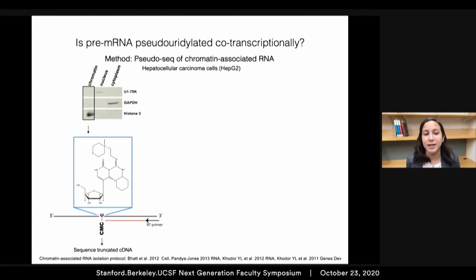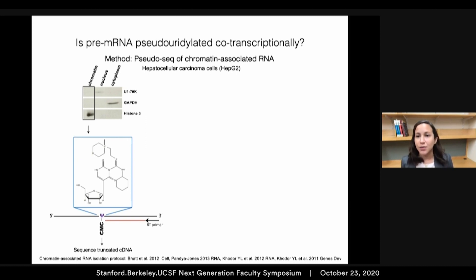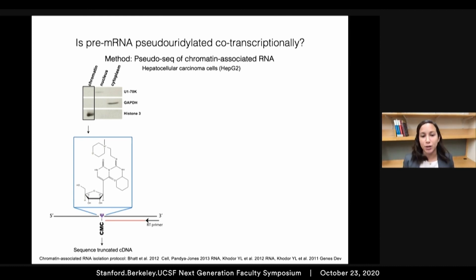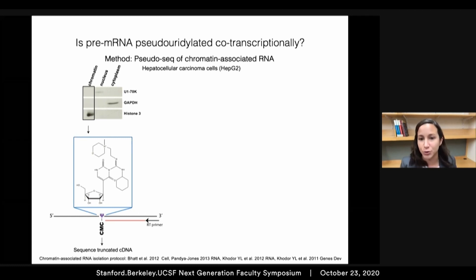To do this, I took advantage of a chemical that can react with pseudouridines — CMC — and this labels the pseudouridines, creating bulky pseudouridine-CMC adducts that form roadblocks to reverse transcriptase. So you can identify the location of pseudouridines based on where reverse transcriptase falls off at these adducts, and use high-throughput sequencing to identify the location of pseudouridines across the transcriptome.